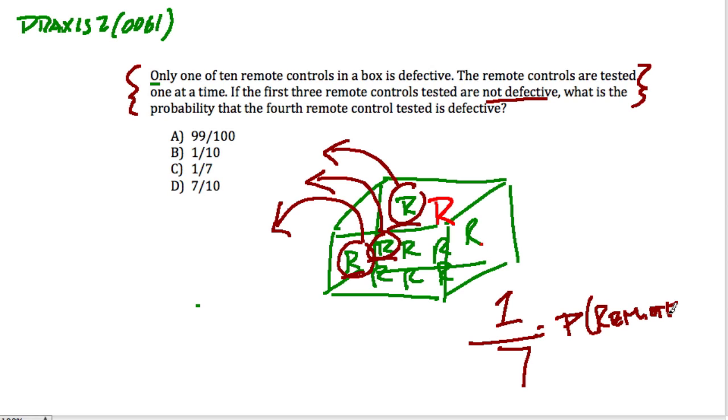Because there's seven remotes left, and one of them is defective. So it's one out of seven, which is choice C.